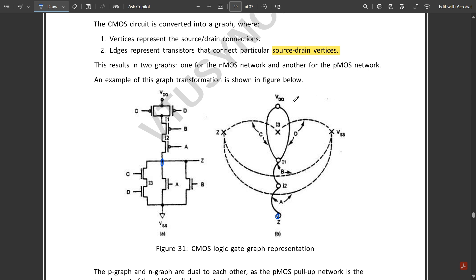This is for pMOS. Now for nMOS, the cross mark indicates the output and this cross mark indicates ground. For nMOS logic, C and D are in series. According to that, from the output we have one to I3, from Z to I3 and from I3 to ground. These two are C and D.